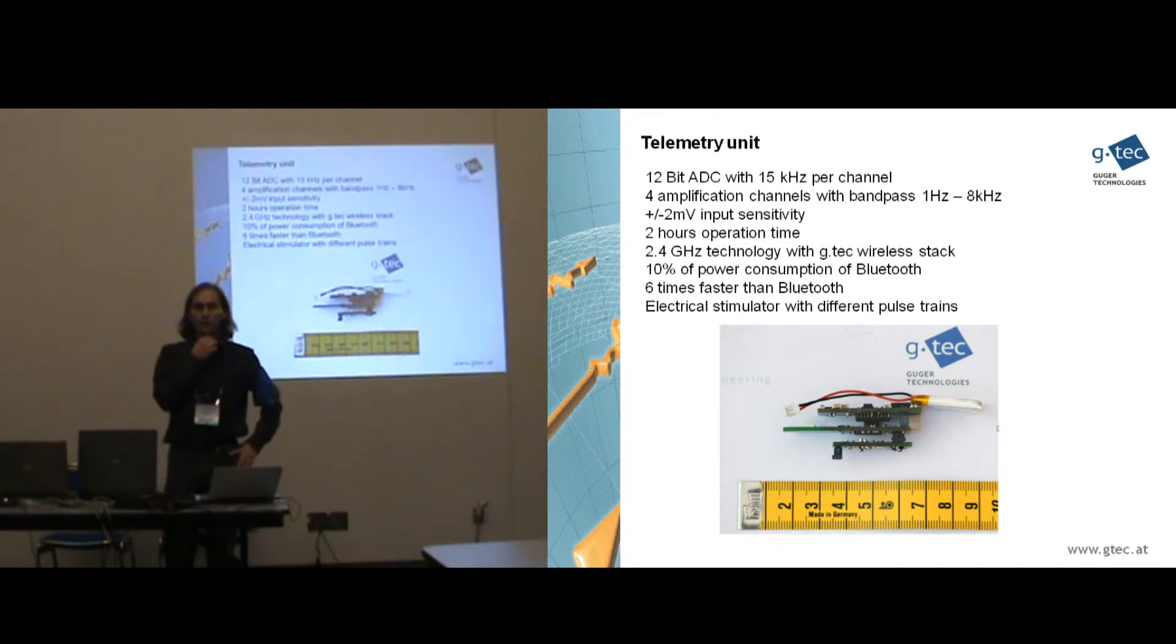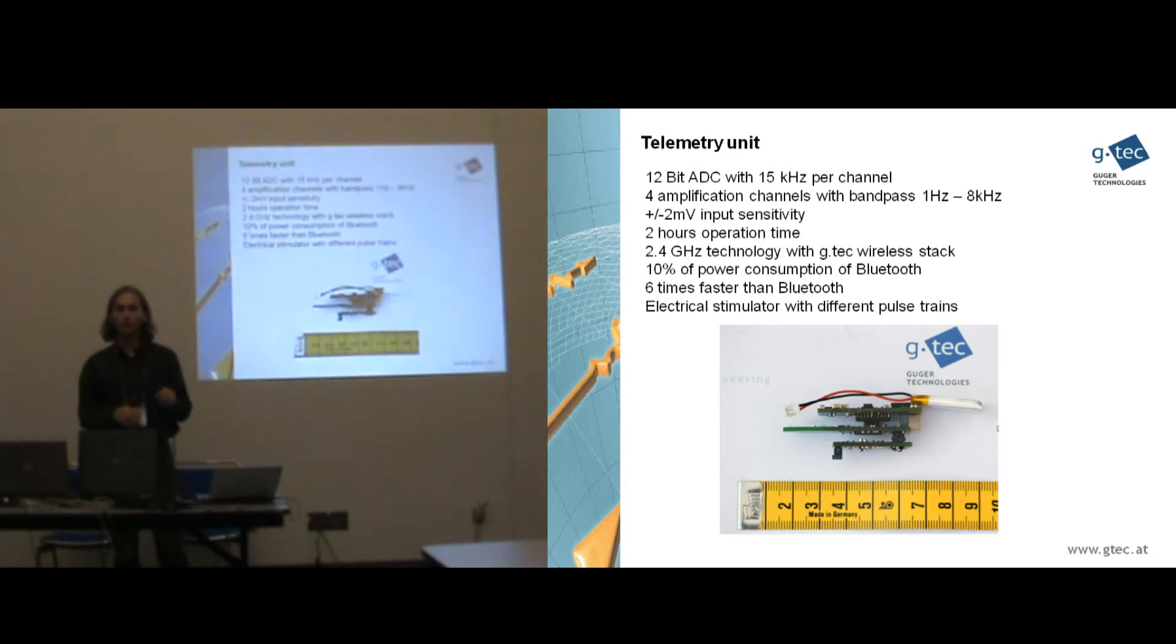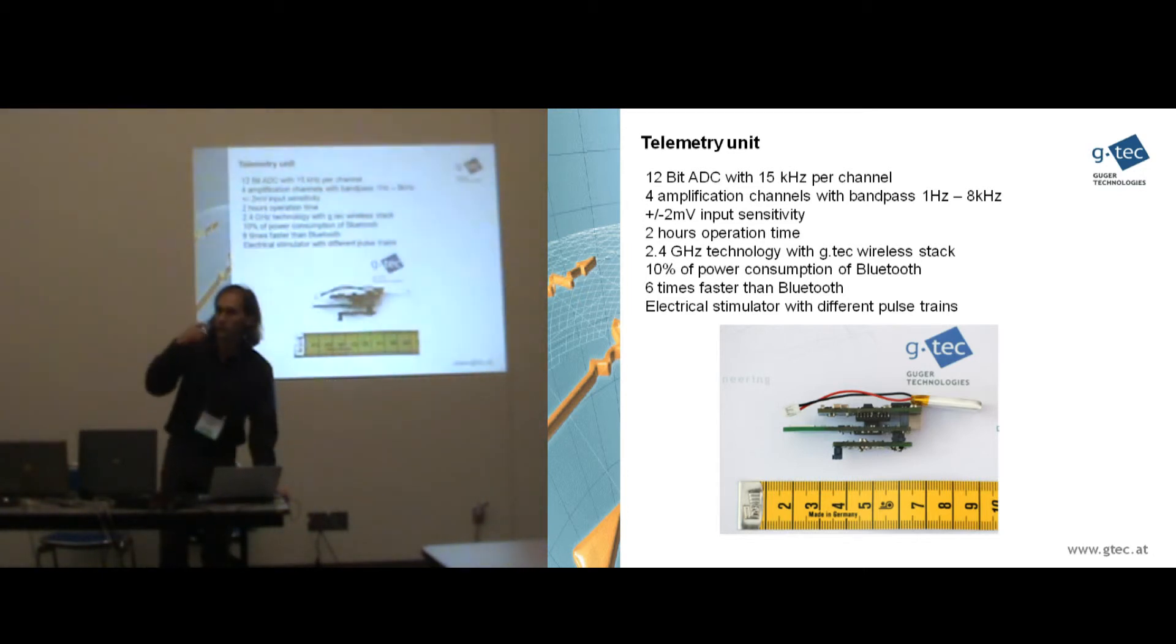So the unit includes a 12-bit ADC and it's sampling each channel at 15 kHz. So in this case we use only 12-bit because 24-bit converters need a lot of energy, which is not possible to have it on such a small board. We have a bandpass between 1 Hz and 8 kHz. This is a standard setting for spike recordings. Input sensitivity is plus minus 2 mV. So spikes have approximately an amplitude of 100 microvolts. It works for 2 hours. And it's using 2.4 GHz technology for transmitting the data. And we need only 10% of the power of traditional Bluetooth devices, which is important so that you have a longer recording time. And it's 6 times faster than Bluetooth.